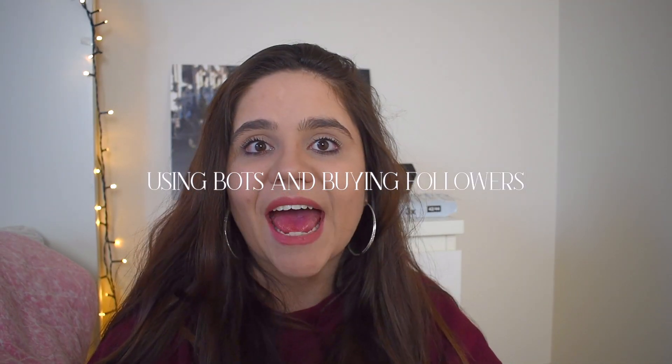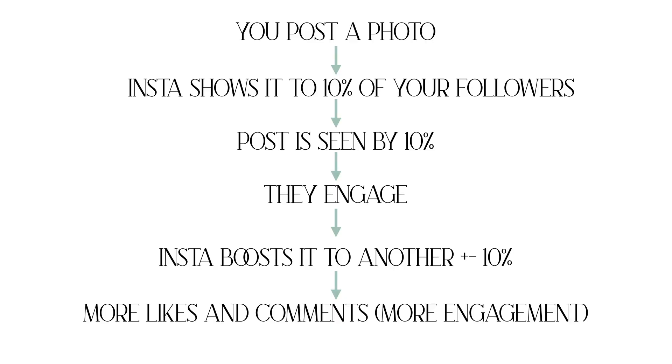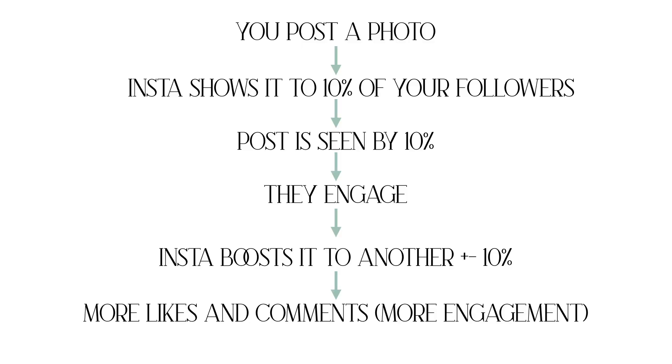The second mistake is using Instagram bots and buying followers. When you post a photo, Instagram will show it to around 10% of your followers. When those people engage a lot with your photo, Instagram thinks it's doing well and sends it to another 10% or more. When they engage too, it spreads out just like a domino effect.